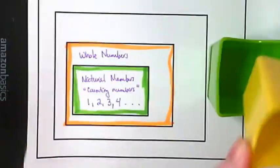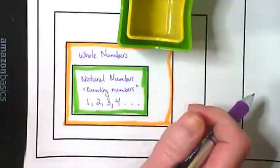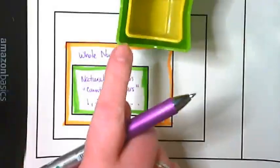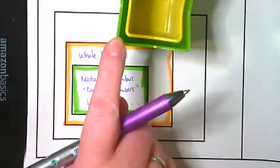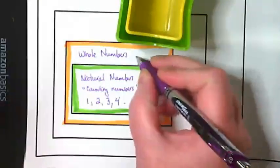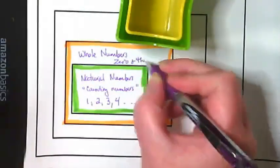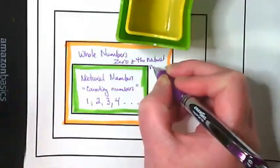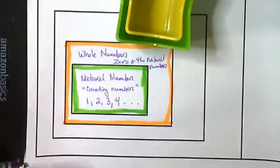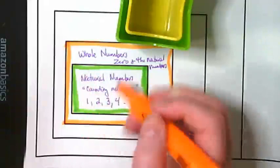All of the natural numbers are in this set. So that one, two, three, four, five, coming up and up and up. All of those are in this set, but what's been added to it is that number that little kids don't start with. It's zero and the natural numbers.